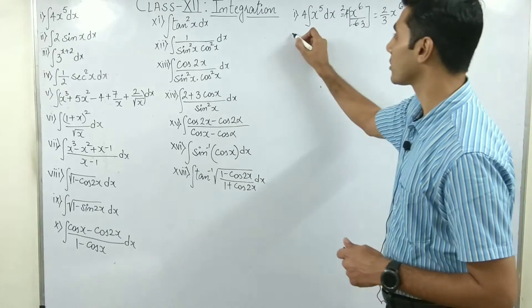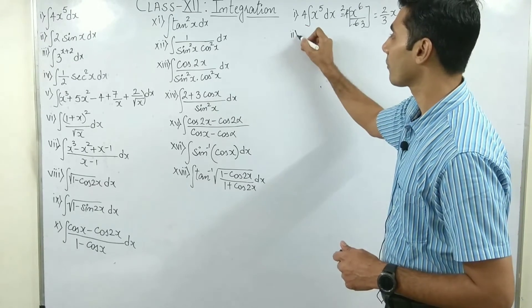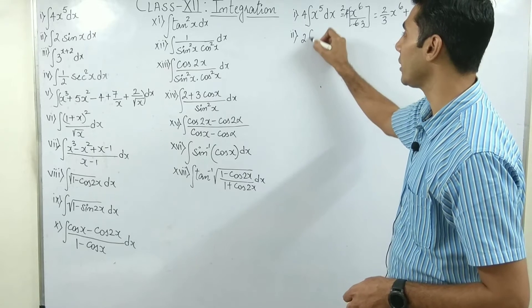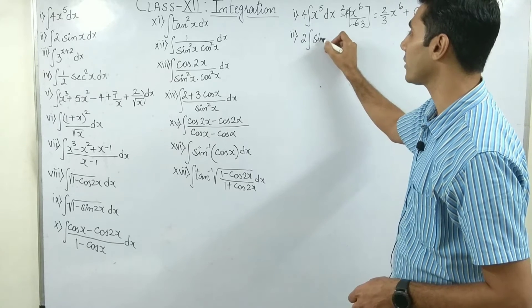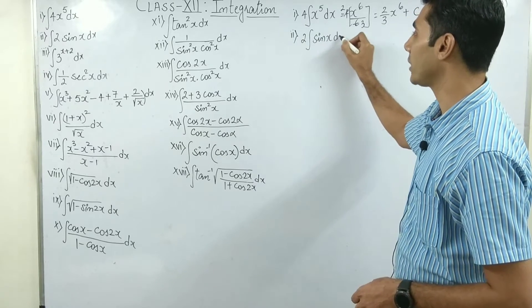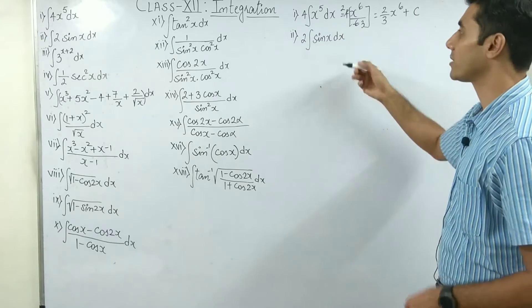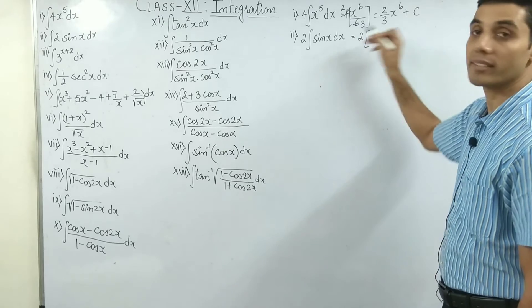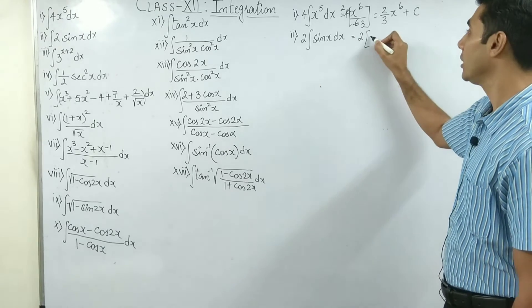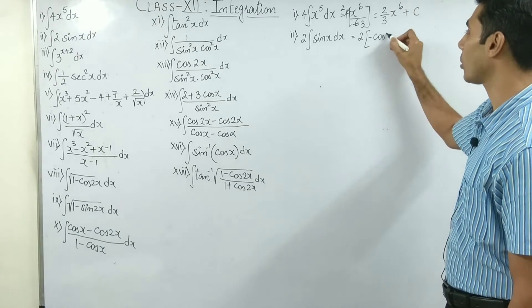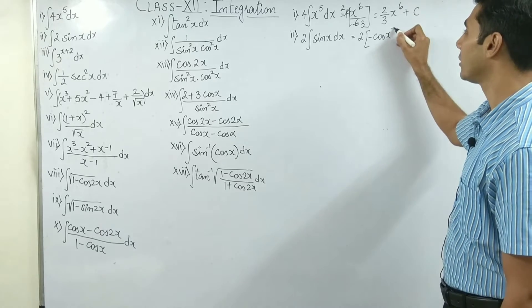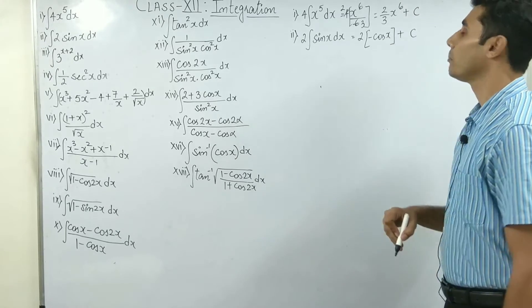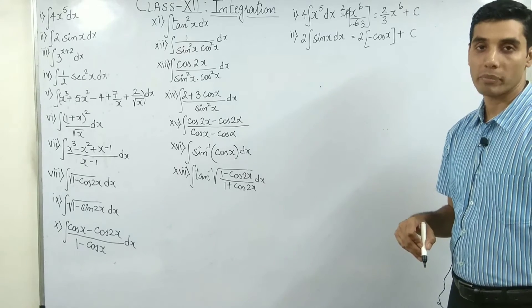Question 2: integrate 2 sin x dx. Take 2 outside. Integration of sin x dx is minus cos x. So the answer is minus 2 cos x plus c.